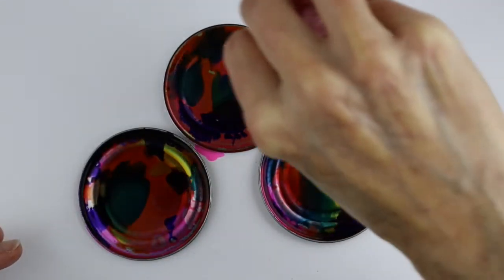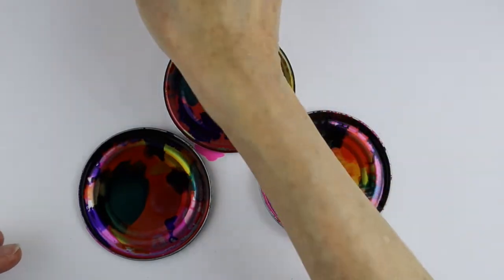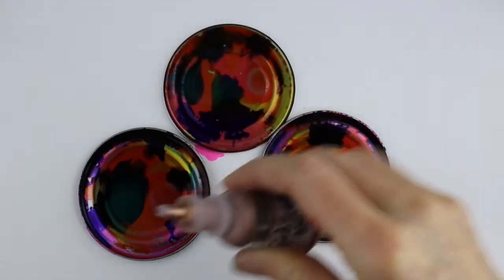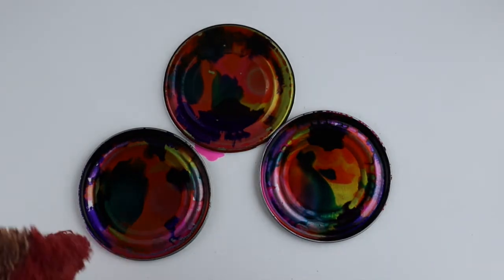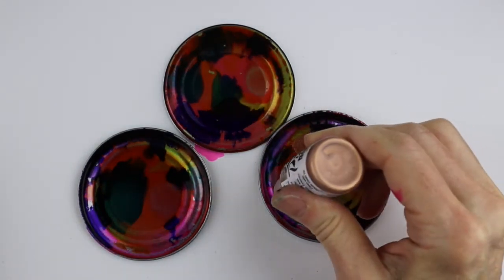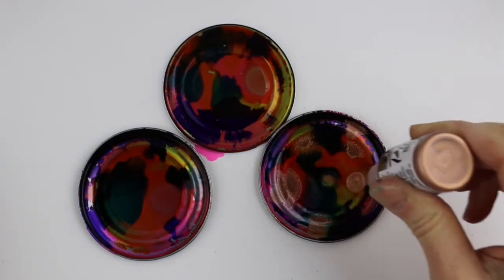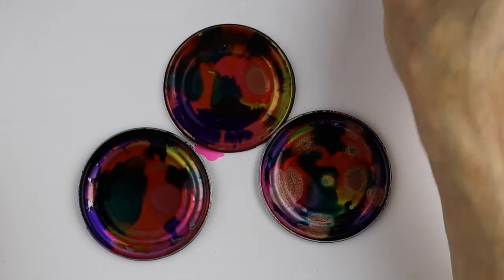It's a good thing we took the numbers off before we started because they might have shown through. Now we've got some of this copper one, we're just going to have to unplug the hole a little bit. There we go. Let's get some of the copper - the metallic is so beautiful, it just looks really pretty.